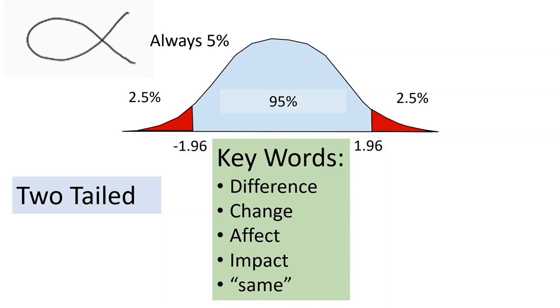then that would imply it's a two-tailed test. Because if they're not the same, then it could be either way, upper or lower. So these are the keywords you're going to find in the research question that dictate that a two-tailed test is warranted. Therefore, our rejection region would be using the 1.96 and negative 1.96 z-scores to define our rejection region.